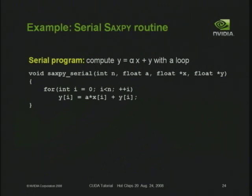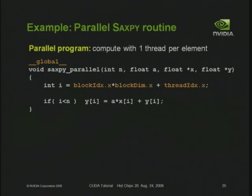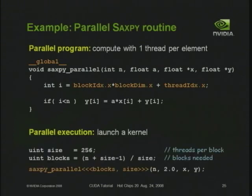I want to show you one more example — a simple SAXPY loop, a standard BLAS routine, basically the same as vector addition. Here's the serial version: a loop over all elements. Since each iteration is independent, this is trivially parallelizable by spreading loop iterations over threads of a CUDA kernel. Unlike before, I check that I don't go off the end of the array with 'if i < n'. I compute the appropriate number of blocks and pick 256 threads per block — it can't be bigger than 512 per CUDA's limit. I happen to like powers of 2.